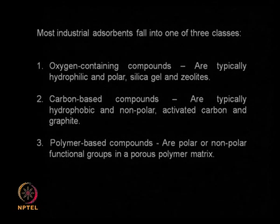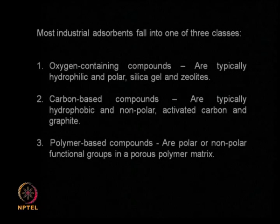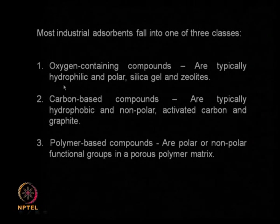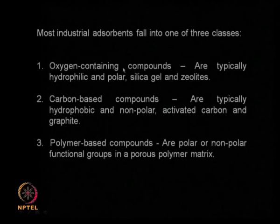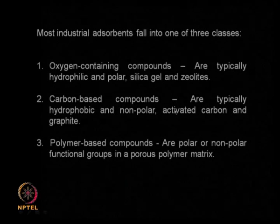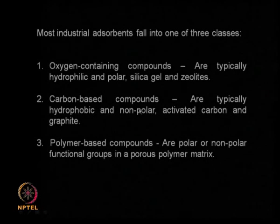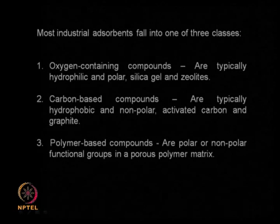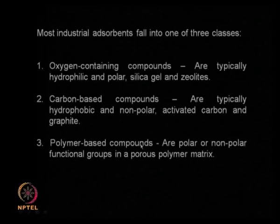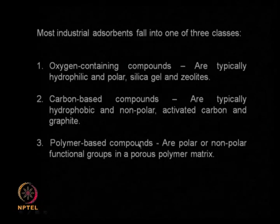Most industrial adsorbents fall into three categories. First, oxygen-containing compounds, which are generally hydrophilic and polar — like silica gels and zeolites. Second, carbon-based materials, which are hydrophobic or non-polar — like activated carbon and graphite. Third, polymer-based materials, where polymers act as a matrix especially in ion-exchange type adsorption, with cations or anions anchored onto a polymer matrix. These are the three types of adsorbents used in industrial applications.